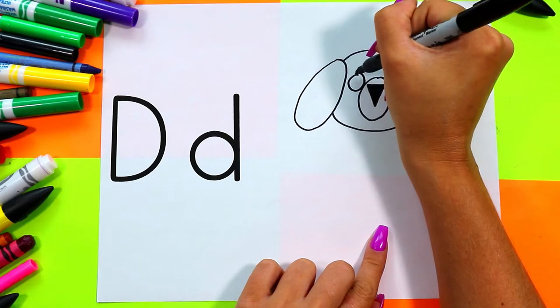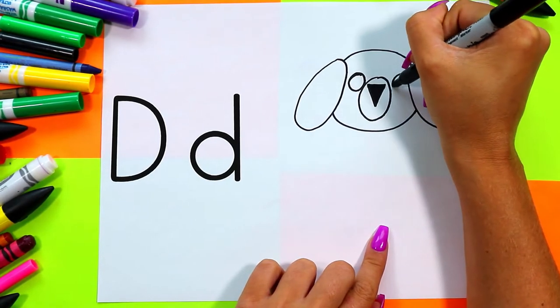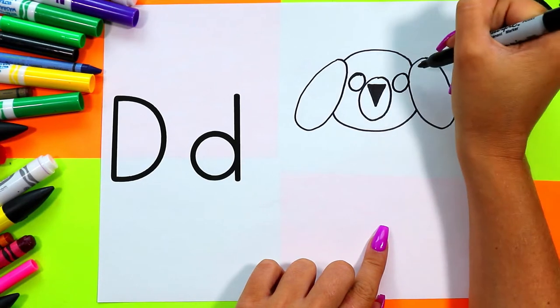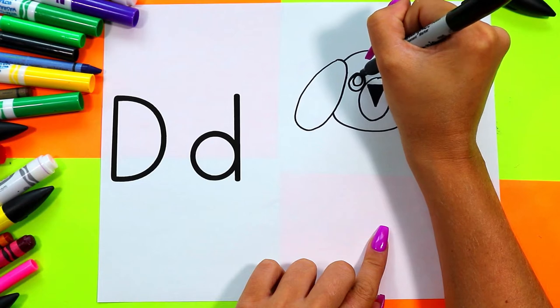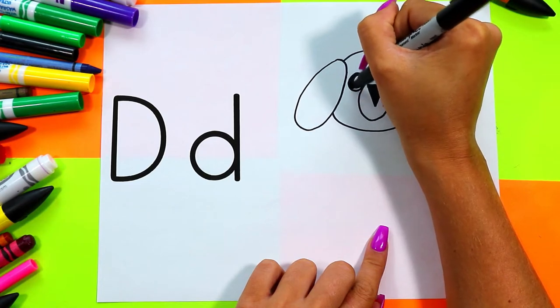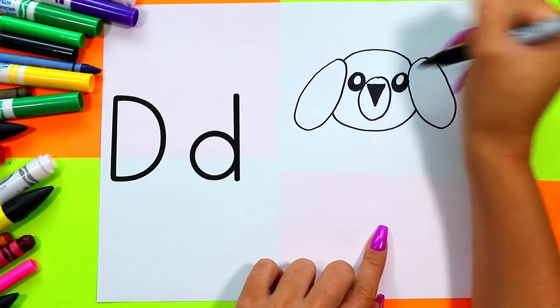Draw a circle on each side of the snout for dog's eyes. Draw a smaller circle in each eye and color around it to create cute little dog eyes.